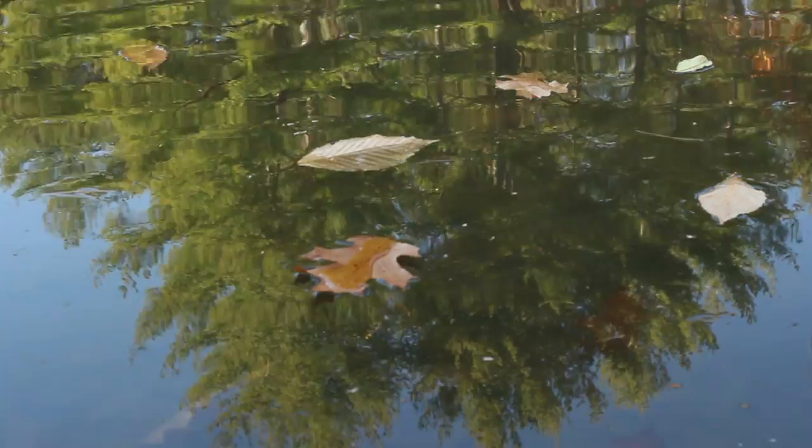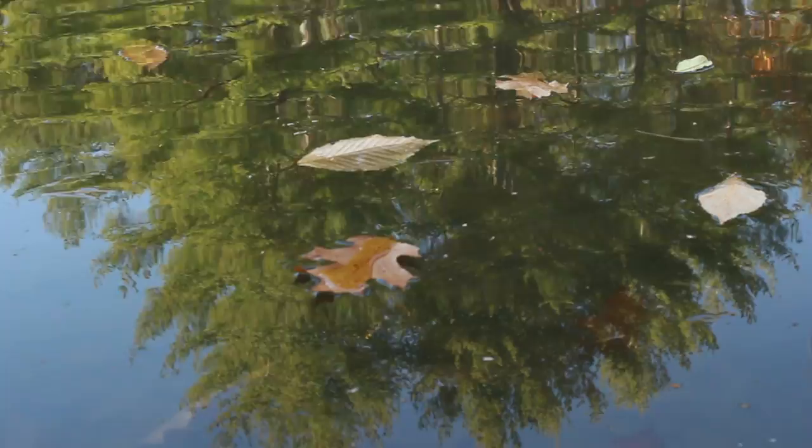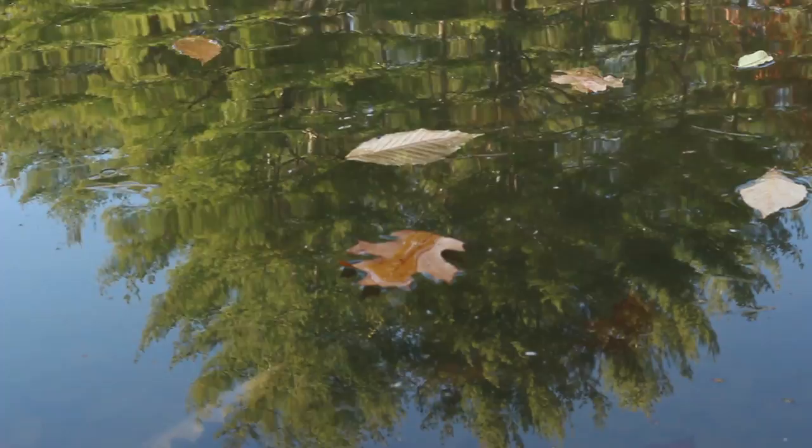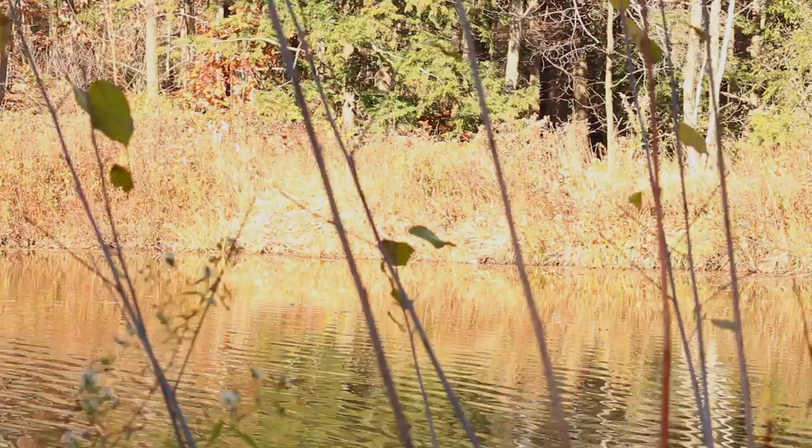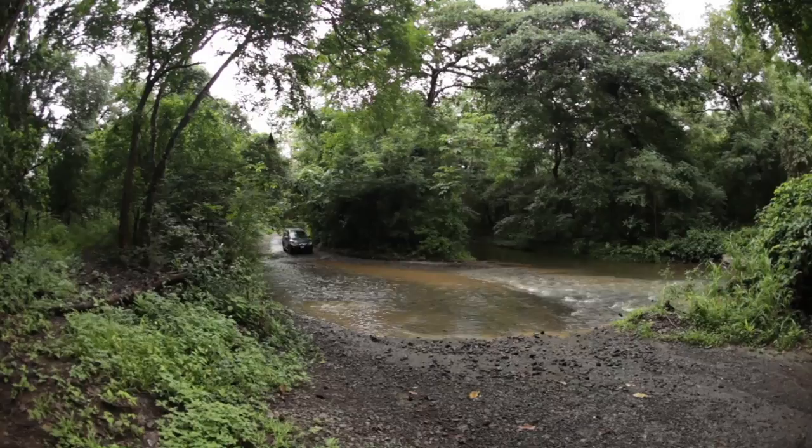All mosquitoes require water for their larvae, or immature stage of mosquitoes, to develop into adults. Different species of mosquitoes use different types of water habitats. Generally, mosquito habitats are divided into two categories: permanent water and flood water. Permanent water sources are present for long periods of time and can support the growth of different types of plants. Flood water sources alternate between periods of dry and wet, such as when water overflows as a result of a flood or melting snow.